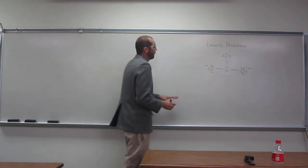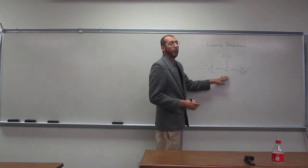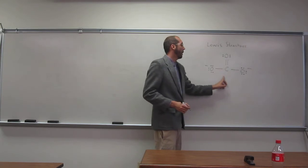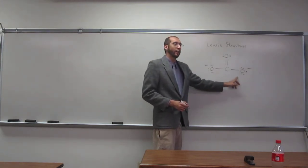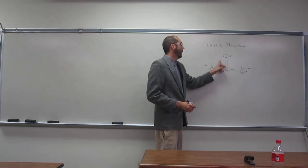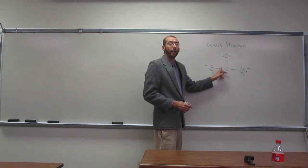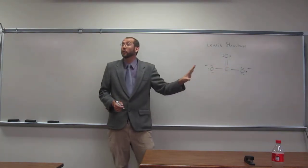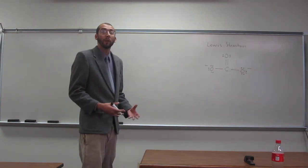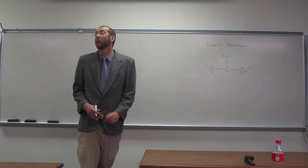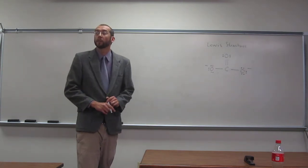If I look at this, this would imply that I have a bond angle of 180 degrees there and a bond angle of 90 degrees there, which is not the case. These electrons want to get as far away from each other as possible. In order to do that, they have to get 120 degrees away from each other.